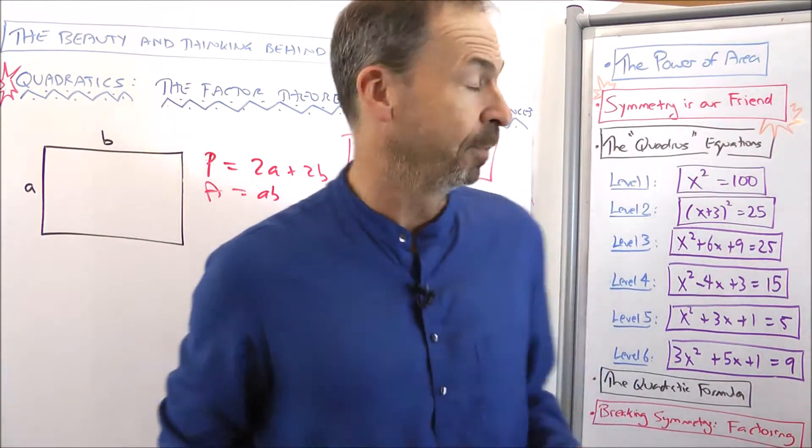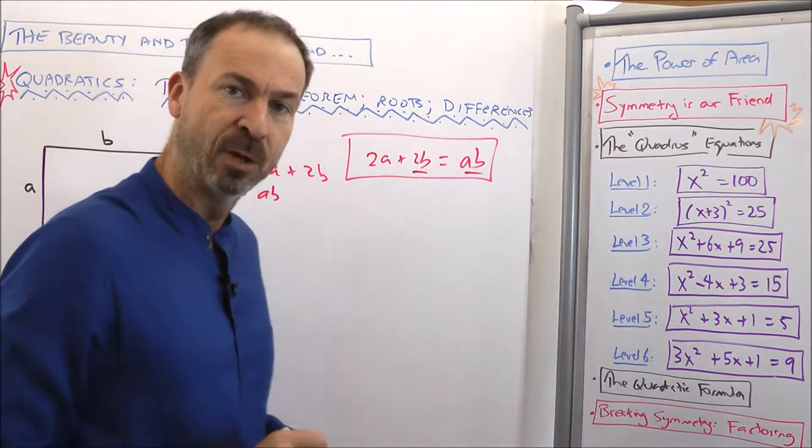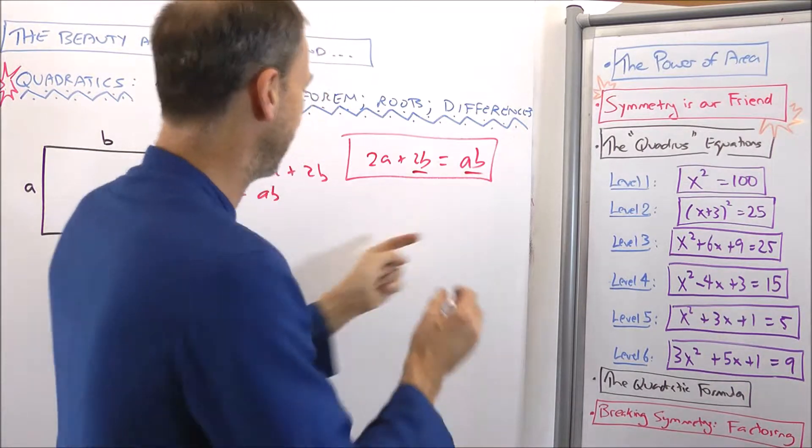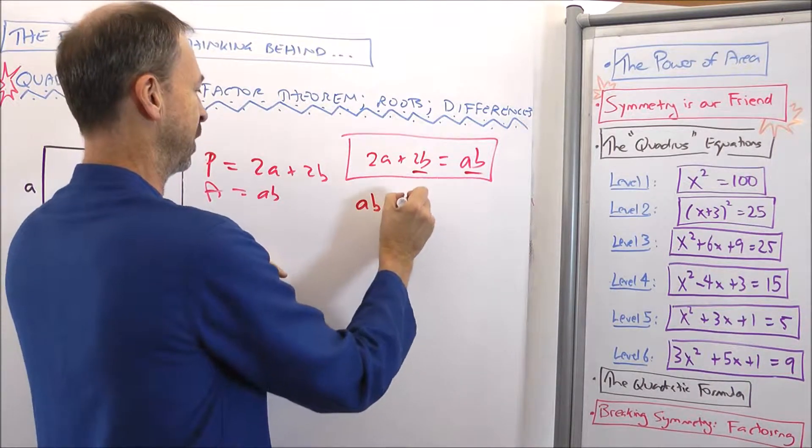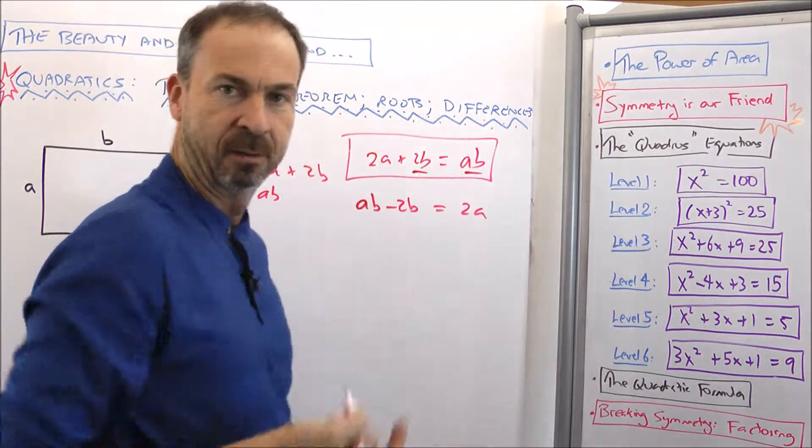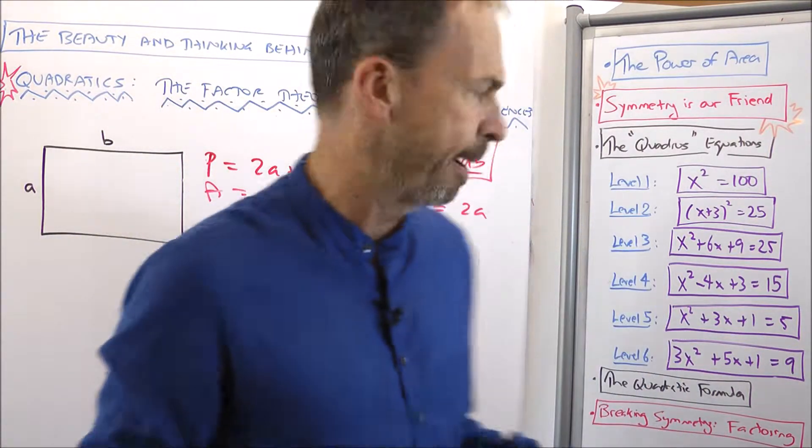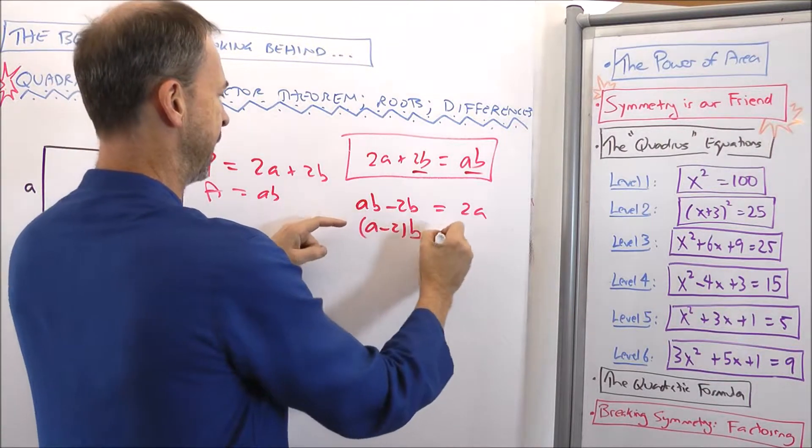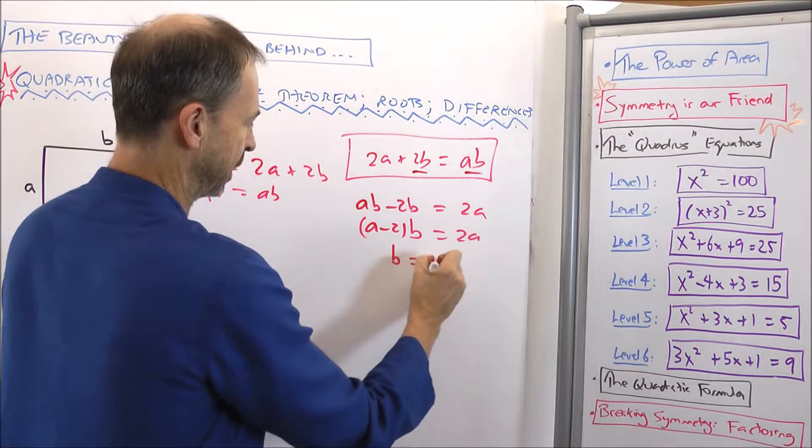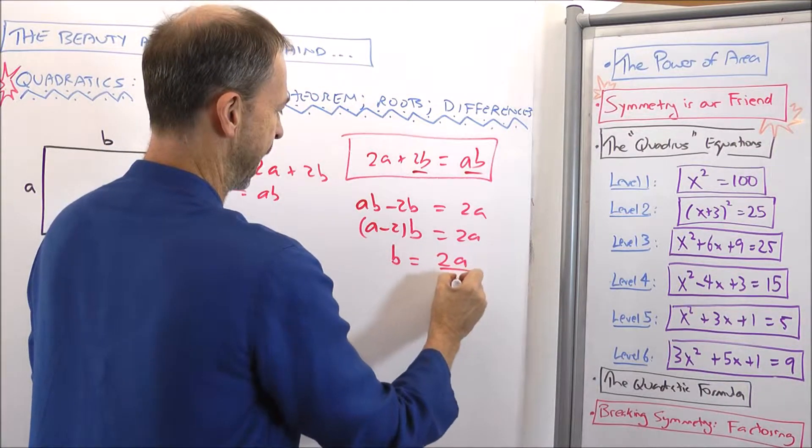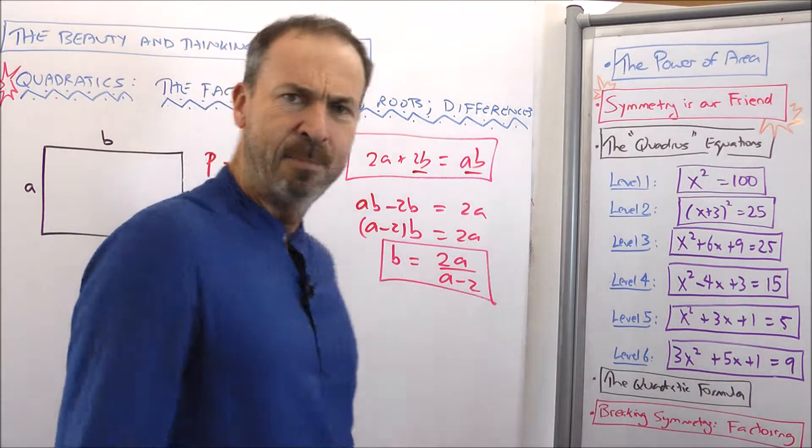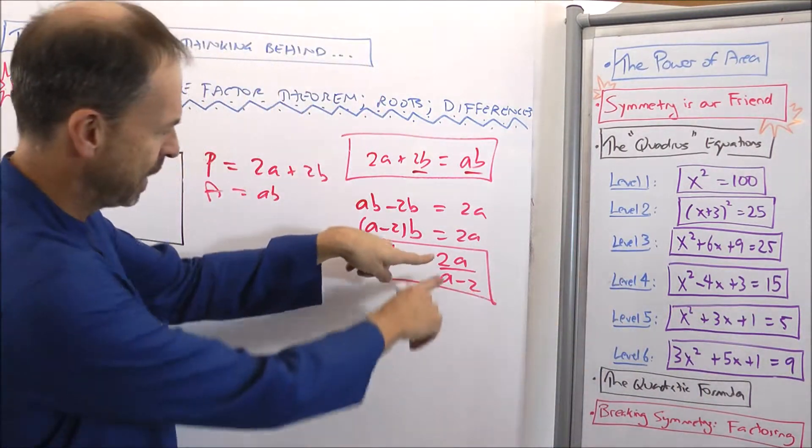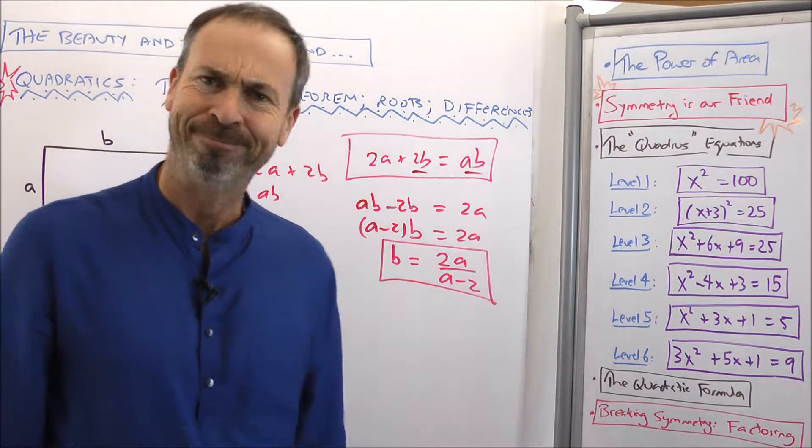So right now I've got a 2b on the left and an ab on the right. Let me subtract 2b from both sides. So I'll have ab - 2b = 2a. So I've got (a - 2)b = 2a, which means b must be 2a/(a - 2), which looks a bit worrisome because I wanted integers. It looks like b is about to be a fraction.